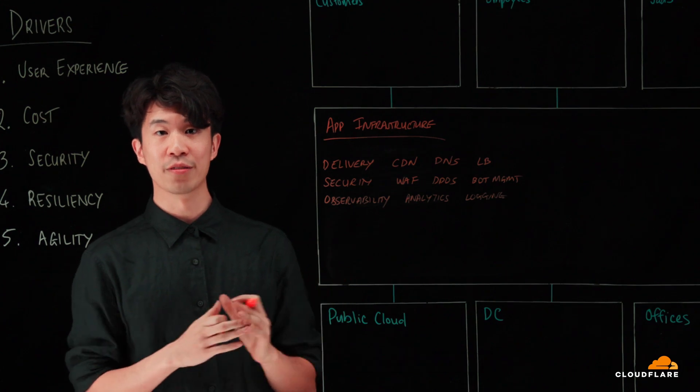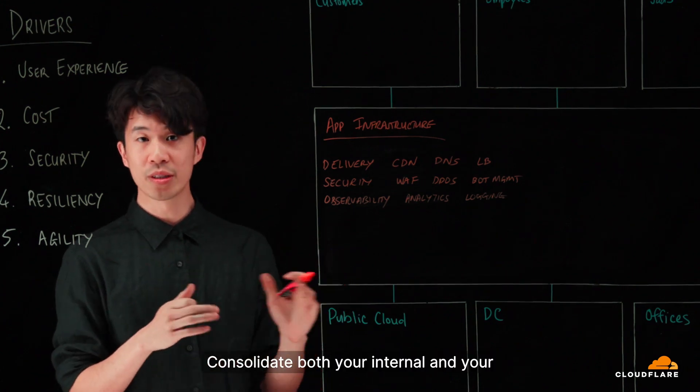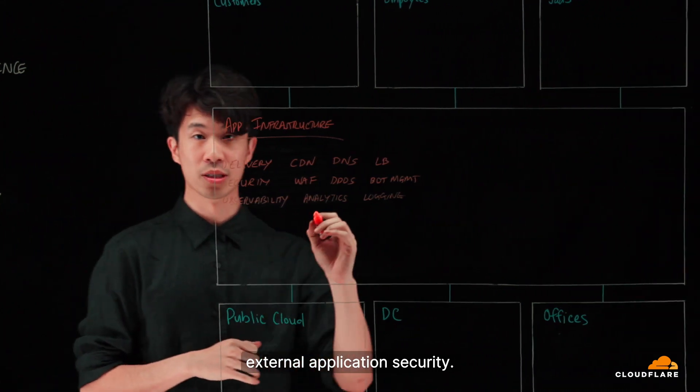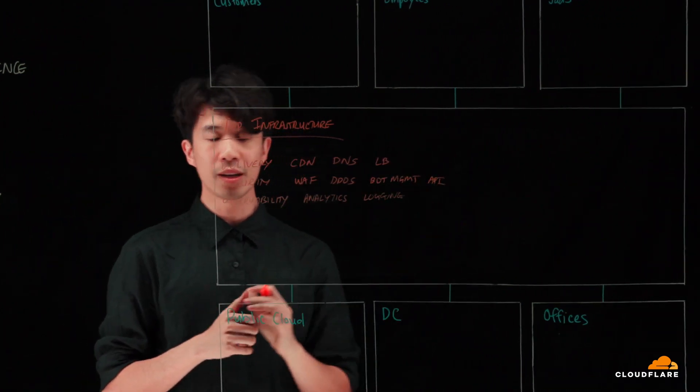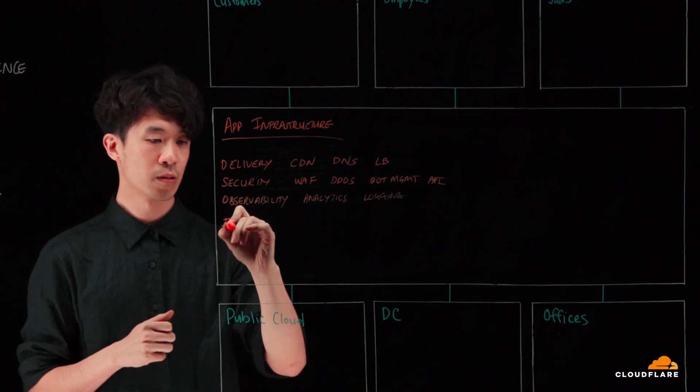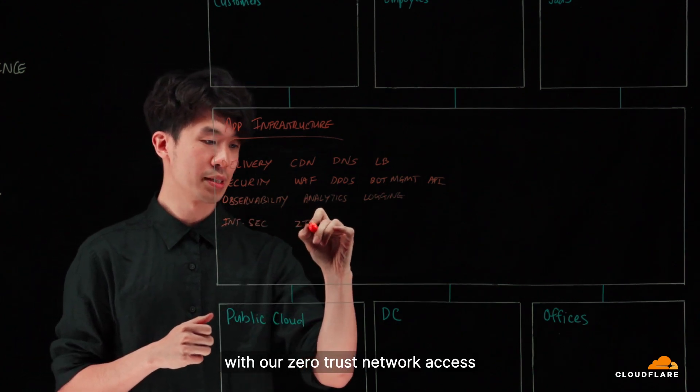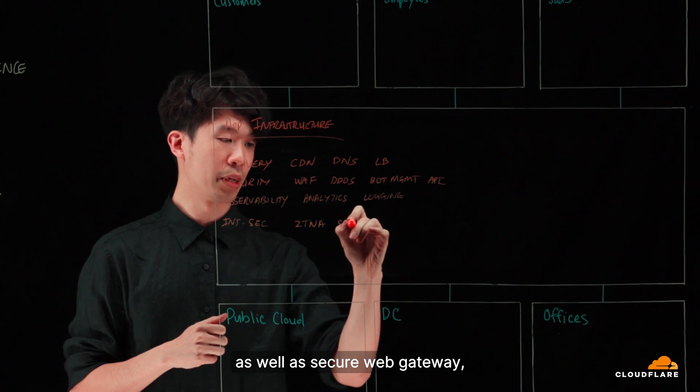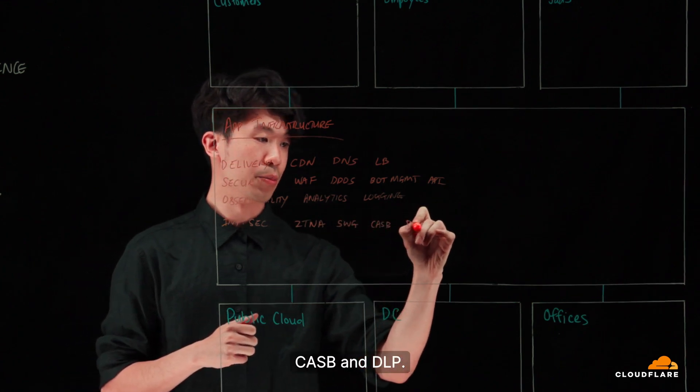Next, you can start to consolidate your vendors by re-platforming. Consolidate both your internal and your external application security. The external with your API security and internal security with the zero trust network access as well as secure web gateway, CASB, and DLP.